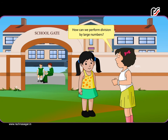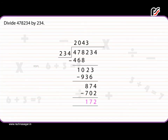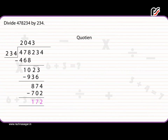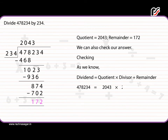Division by large numbers: For example, divide 4,78,234 by 234. Quotient is equal to 2,043 and remainder is equal to 172. We can also check our answer: dividend equals quotient multiplied by divisor plus remainder. So, 4,78,234 equals 2,043 multiplied by 234 plus 172, which equals 4,78,062 plus 172, which equals 4,78,234.